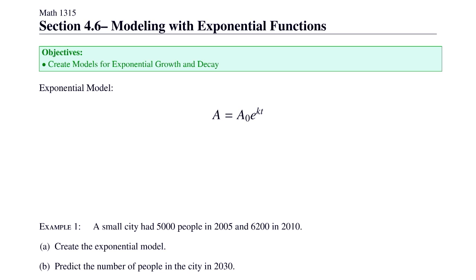In section 4.6, we'll look at modeling with exponential functions. The basic exponential model is A equals A naught e to the kt. Recall that whenever we tack on the subscript of a zero, that stands for the initial amount of something, whatever the A represents. In our exponential model, we have k as a parameter. This parameter is called the growth or decay constant.